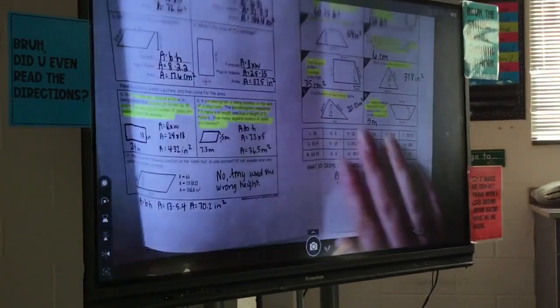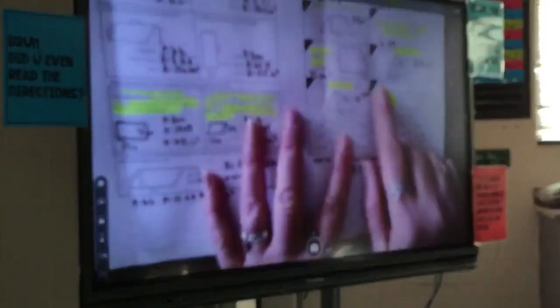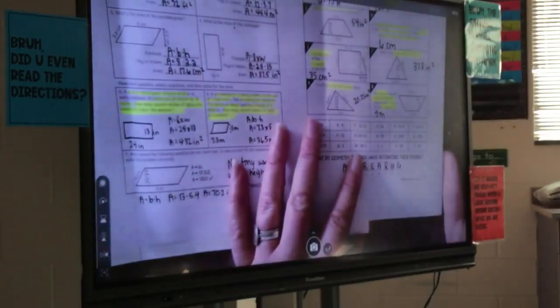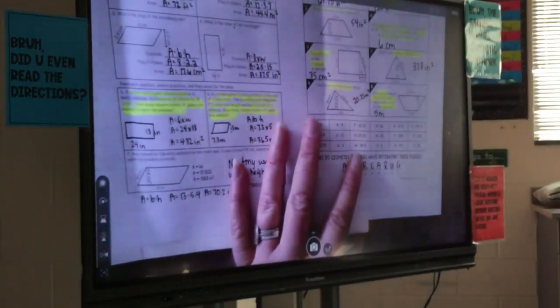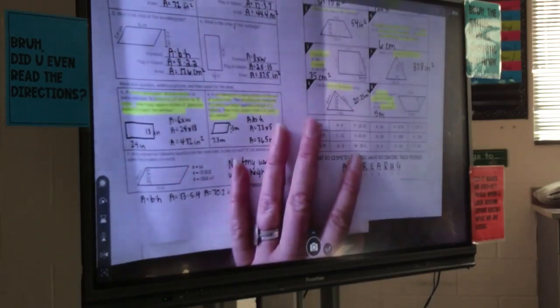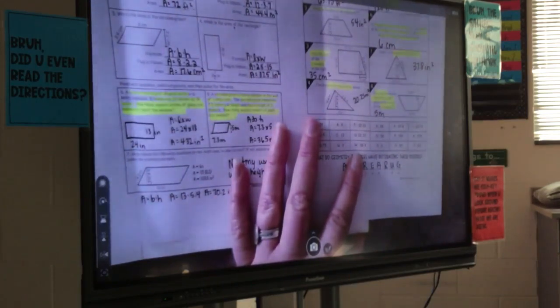Number four says find the area of the triangle. This one is going to be very similar to what you guys are going to see on your tests and quizzes and the benchmark and the EOG. You have four numbers and you have to figure out which two to use. What's the formula for the area of a triangle? Raise your hand.